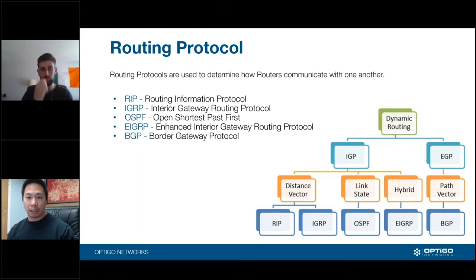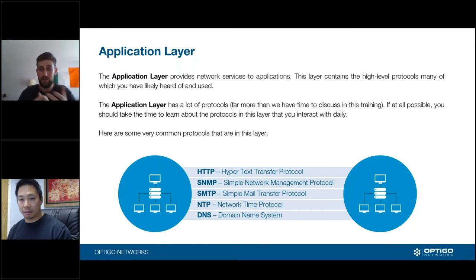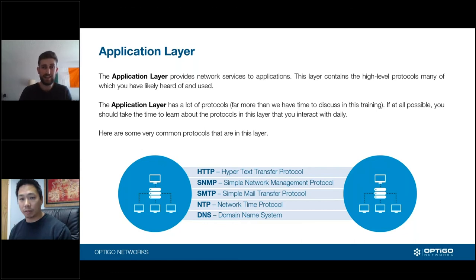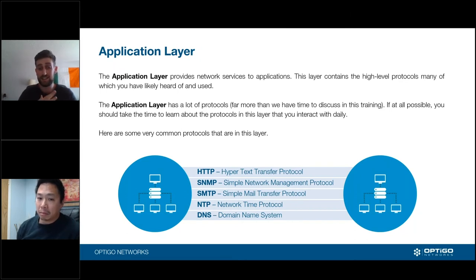The application layer is essentially what you're experiencing when using an app on your phone. There are a couple of OSI layers encapsulated into this as we look at it. If at all possible, try to learn the different types of protocols. We've mentioned HTTP and HTTPS. We also have NTP — Network Time Protocol — which is how we sync systems so everyone is on the same clock.